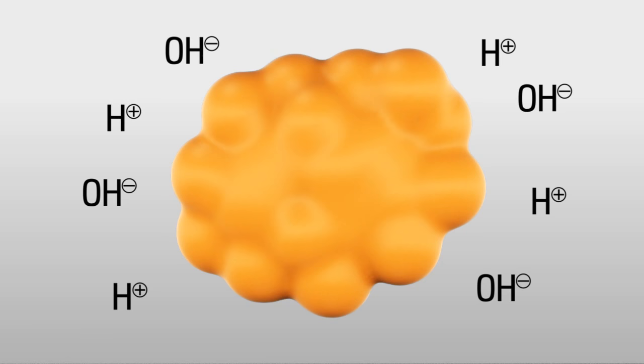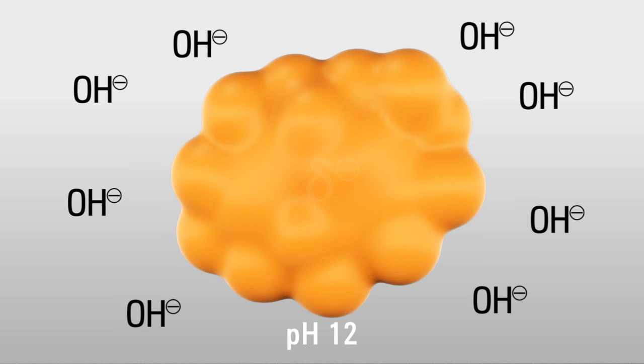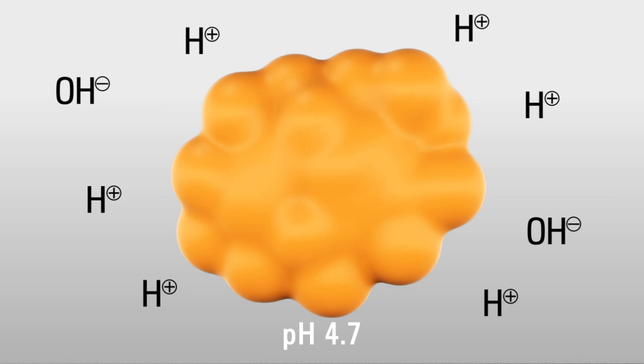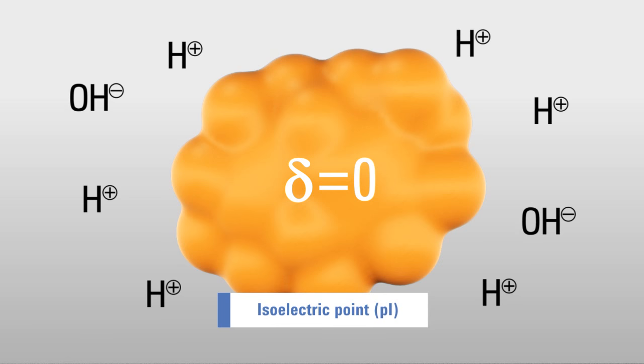Depending on the pH of the surrounding media, the protein's net surface charge can change. Under high pH conditions, the protein's surface charge becomes more negative. In contrast, low pH conditions make the protein's surface charge more positive. The pH value at which the protein's net surface charge is equal to zero is called the isoelectric point, or PI.